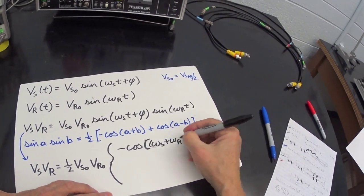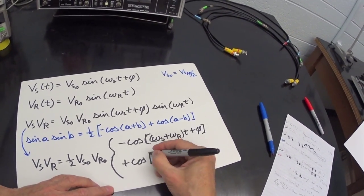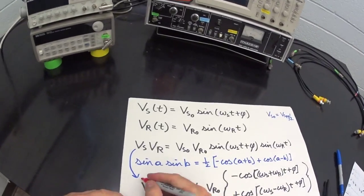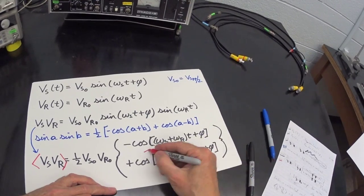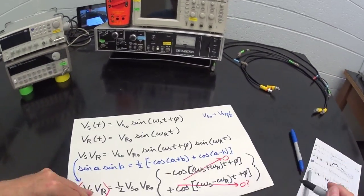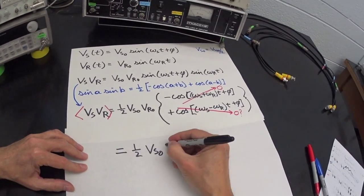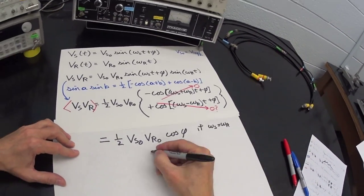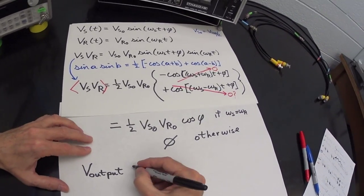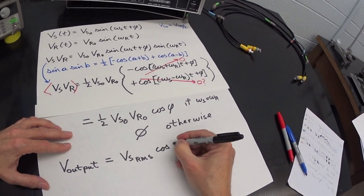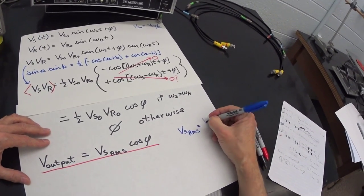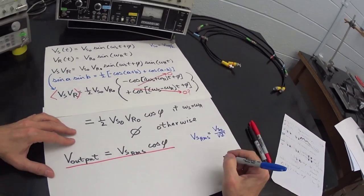A lock-in amplifier averages this product over some time interval, and as we all know, the average of any cosine over many cycles is zero. So the long-term average of the first term will always be zero. The long-term average of the second term will also be zero, and this is where the magic happens, unless the signal and reference frequencies are the same, in which case the average of this term just reduces to the cosine of the phase difference between the signal and reference. The lock-in normalizes this average and outputs a DC voltage equal to the root mean square amplitude of the signal times the cosine of the phase. So that's the math. Let's now see what a lock-in actually does.